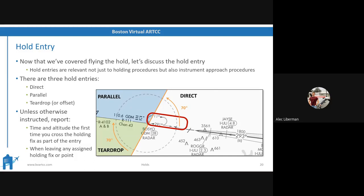There are a couple of reporting points. Unless otherwise instructed, you have to report the time and altitude the first time you cross the holding fix as part of the entry, and when you're leaving any assigned holding fix or point. Usually, though, in practice, air traffic control will tell you just to report established inbound, meaning you don't have to do either of those two. To be honest, almost never do people actually make those standard reports — just like reporting top of descent, which happens about four times a year.